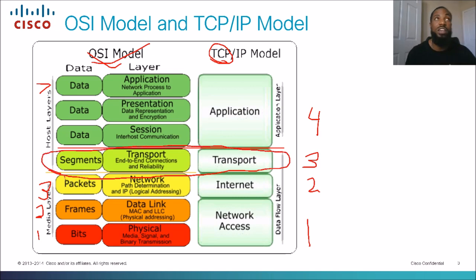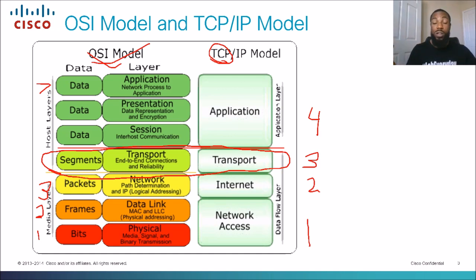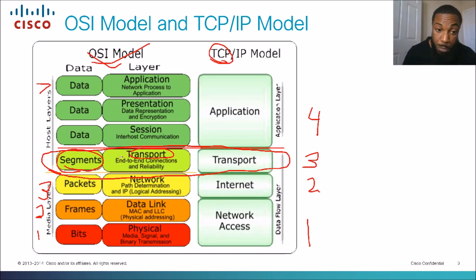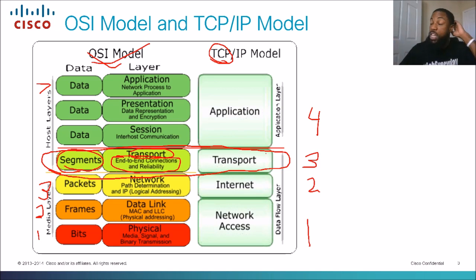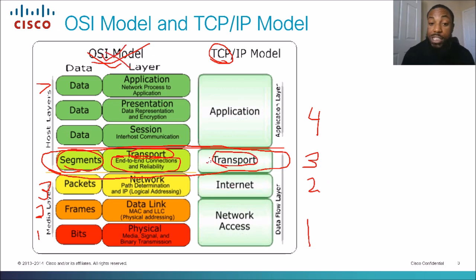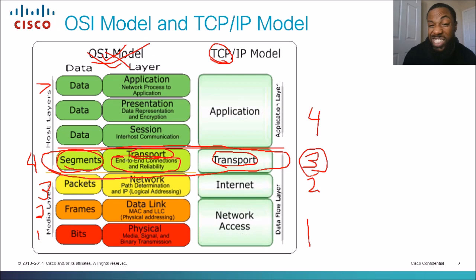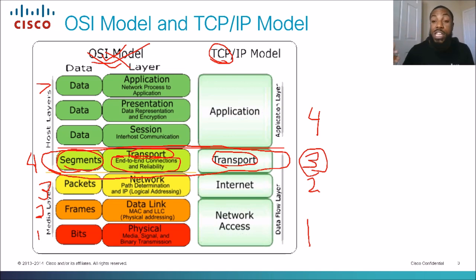When transporting data, there are two types of protocols that can be used to transfer the data. You guessed it — TCP and UDP. The transport layer is responsible for end-to-end connections and reliability. Only one of those protocols is reliable, and we'll go further into that. The transport layer is layer four in the OSI model and layer three in the TCP/IP model, but we refer to it as the transport layer. Protocols within the transport layer are UDP and TCP.